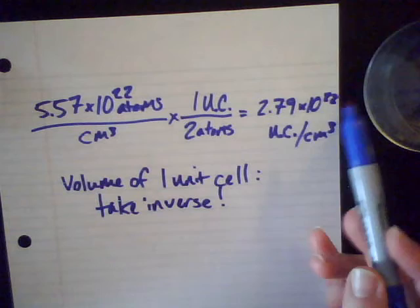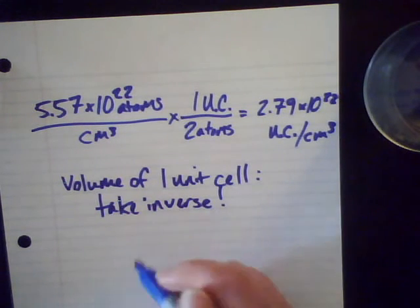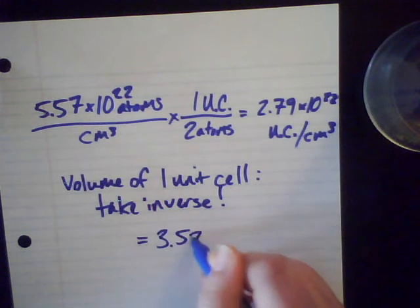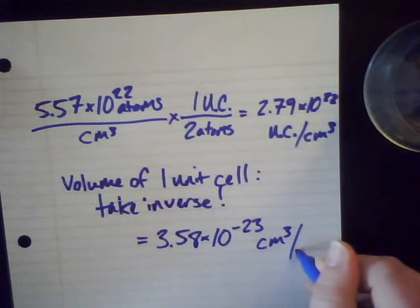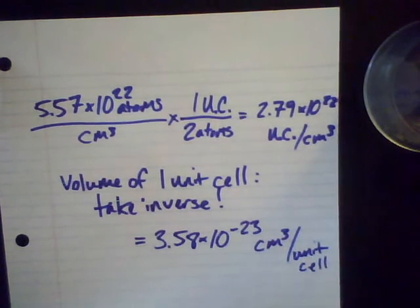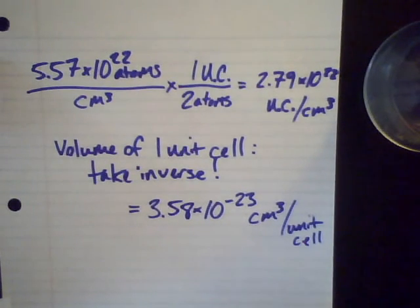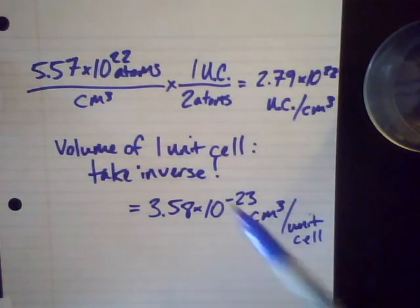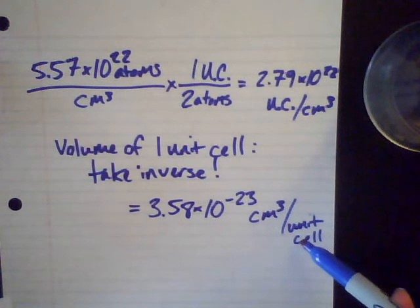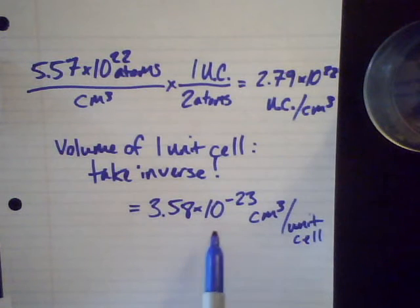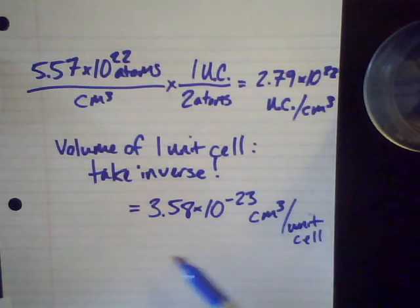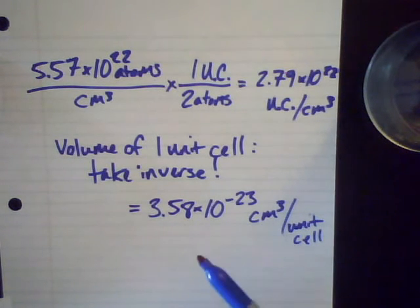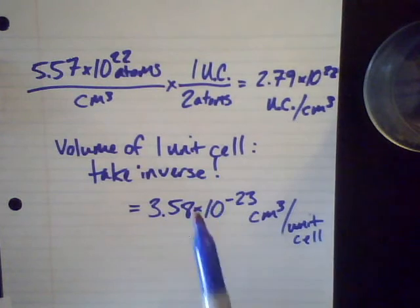So if I just flip this thing over, I take one divided by this number, then I end up with 3.58 times 10 to the negative 23rd centimeters cubed per unit cell. So that's kind of slick. It's a little bit tricky because now we know that this is my volume per one unit cell. So all I had to do is take the inverse. Now this number is really tiny. And it went from a number that's really large to a really small number. Again, this is what we would expect. We would expect it to be a small number when we're talking about the volume of just one individual unit cell.